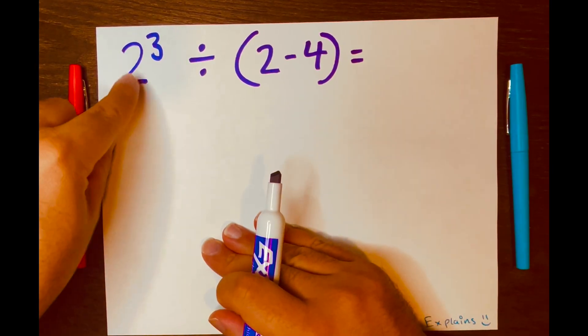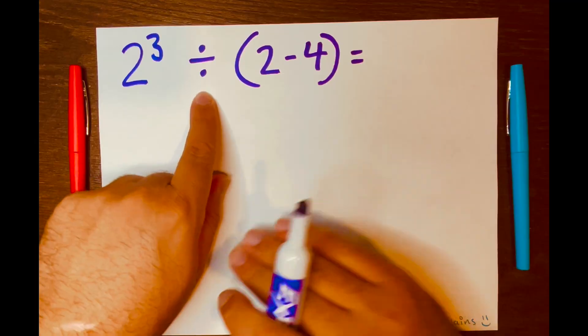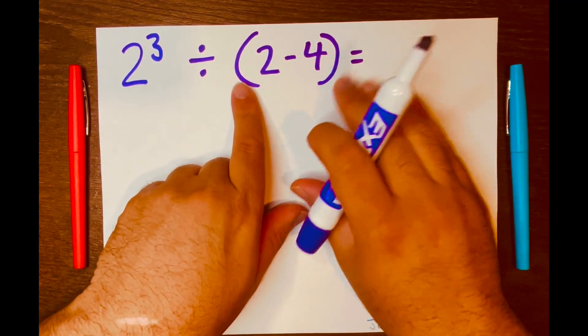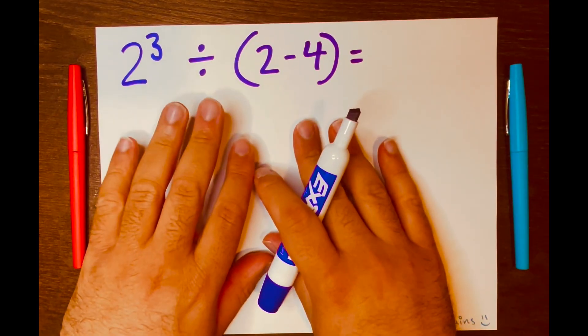All right, we have 2 to the power of 3 divided by 2 minus 4 inside these parentheses equals. Now, to start solving this problem,